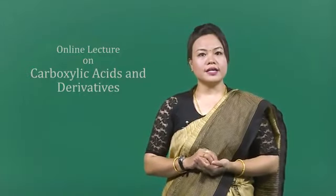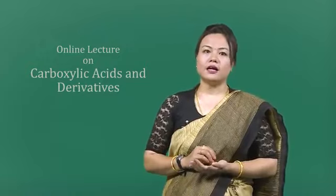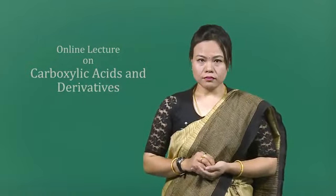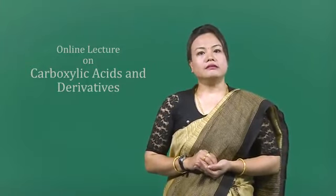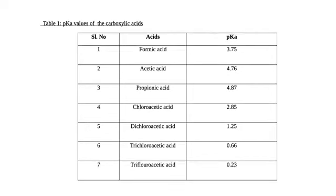Carboxylic acids are thus more acidic than alcohols as well as phenols. In the table, I am giving you some pKa values of the carboxylic acids. The examples given here are formic acid, acetic acid, propionic acid, chloroacetic acid, dichloroacetic acid, trichloroacetic acid, and trifluoroacetic acid. The pKa value of formic acid is 3.75, that of acetic acid is 4.76, and propionic acid is 4.87.